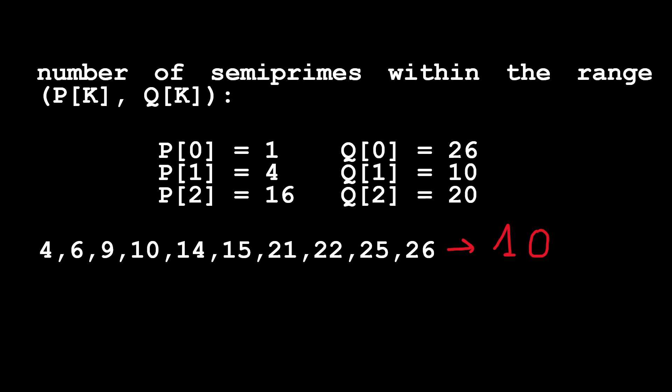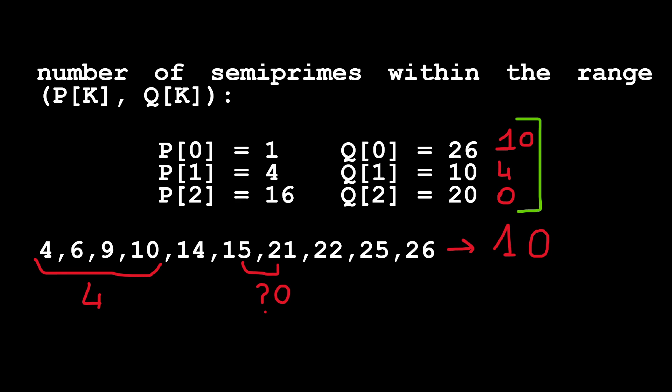For the second couple of boundaries, numbers 4 and 10, between these two numbers we have 4 different semiprime numbers, and this is a value we will push into our results vector. Then for the third couple of boundaries, 16 and 20, there are none between 16 and 20, so we push the number 0 into our results vector. The solution function should return a vector containing the number of semiprimes between each couple of given boundaries.